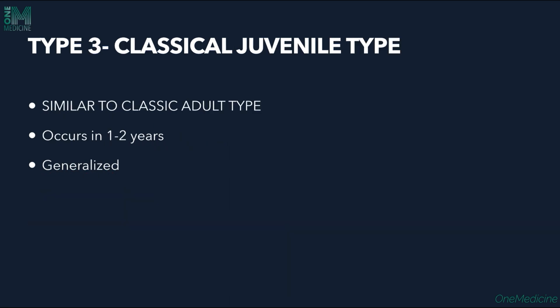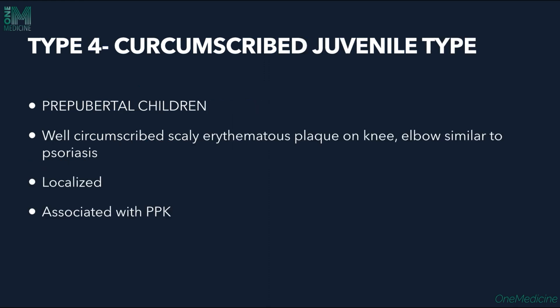Type 3, the classical juvenile type, occurs in the one to two years age group and is generalized, similar to the classic adult type but in a younger age group. Type 4, the circumscribed juvenile type, is seen in prepubertal children with well-circumscribed scaly erythematous plaques on the knees and elbows, similar to psoriasis, and is a very localized disease that can be associated with palmoplantar keratoderma.